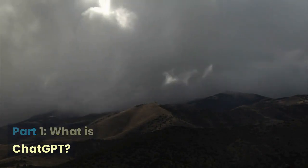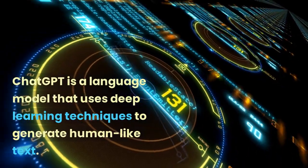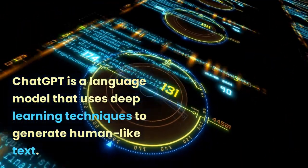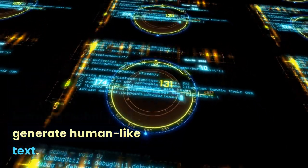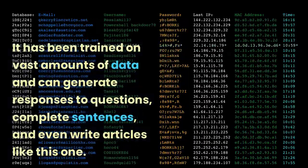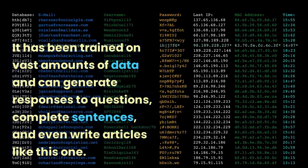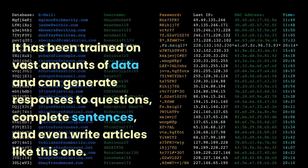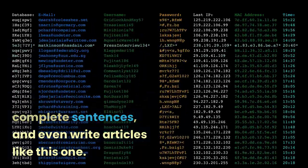Part 1: What is ChatGPT? ChatGPT is a language model that uses deep learning techniques to generate human-like text. It has been trained on vast amounts of data and can generate responses to questions, complete sentences, and even write articles like this one.